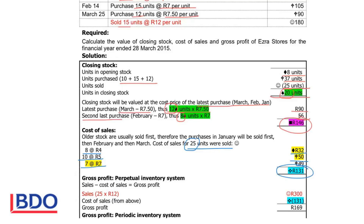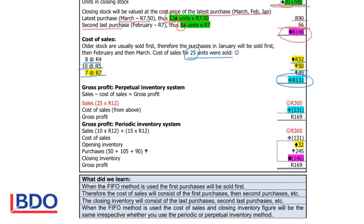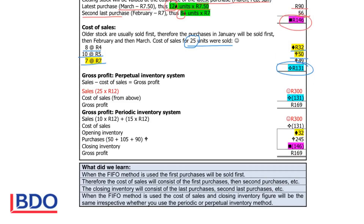To calculate the gross profit, we use the figures calculated now, taking sales less cost of sales. We sold 25 units at R12 each, so total sales is R300. The cost of sales we calculated as R131. Subtracting cost of sales from sales gives a gross profit of R169.